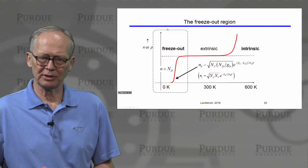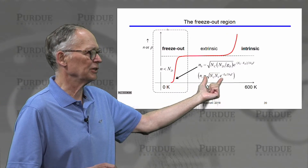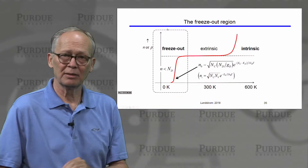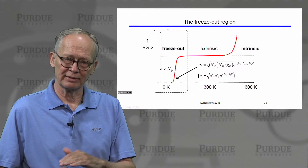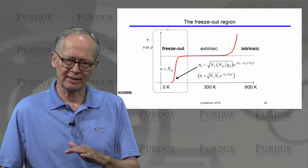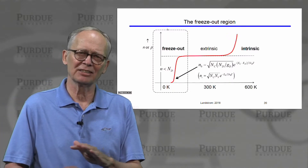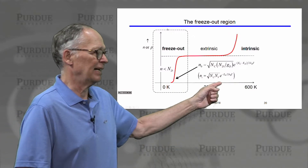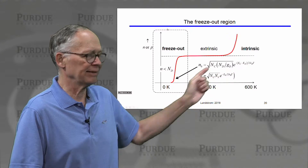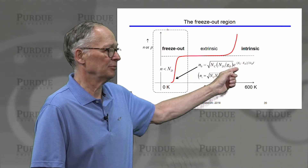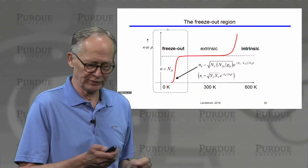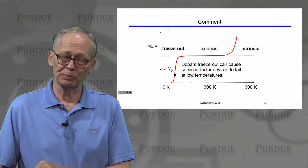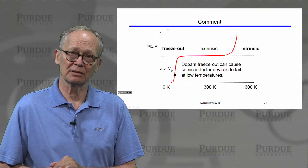This simplified expression looks familiar — similar to our ni expression. We have the square root of the effective density of states for the conduction band, and instead of the effective density of states for the valence band, we have the number of donor states. The thermal energy is so small that there is no probability of exciting electrons from the valence band, so the valence band is out of the picture and the donor levels play the role of the valence band. For intrinsic density the exponential involves minus the band gap over kT; here it involves minus (EC minus ED) over kT. Dopant freeze-out causes semiconductor devices to fail at low temperatures.